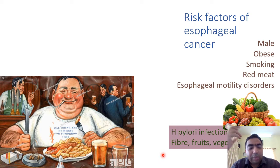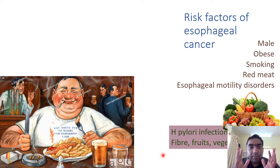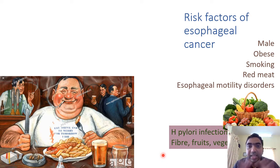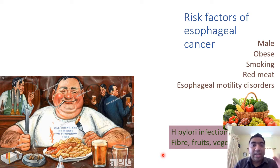How does H. pylori infection decrease esophageal cancer? Fruits, fibres, and vegetables we can understand — antioxidants improve outcomes. For H. pylori: Barrett's esophagus, which carries a high risk of adenocarcinoma, is caused by exposure of the lower esophagus to gastric acid. When there is Helicobacter pylori infection, it can cause gastric mucosal atrophy and decreased acid production, which in turn decreases Barrett's esophagus and thereby decreases esophageal adenocarcinoma. That is how H. pylori is a favorable risk factor.